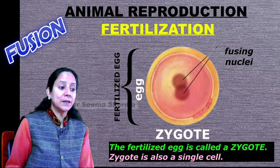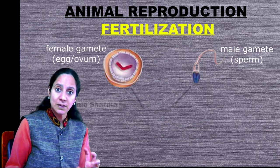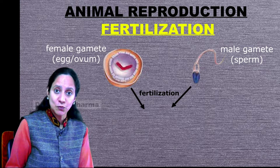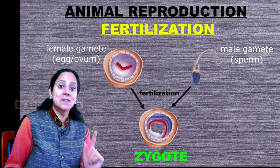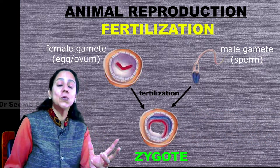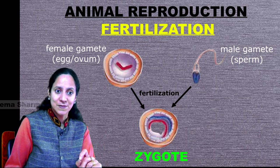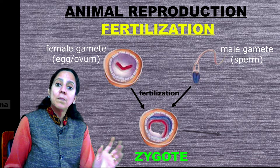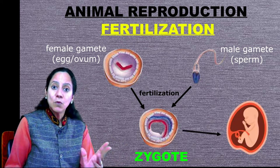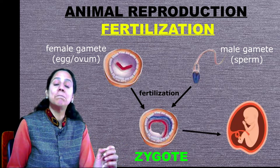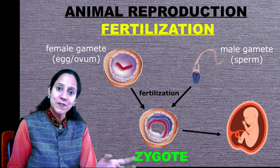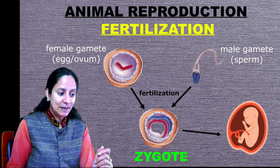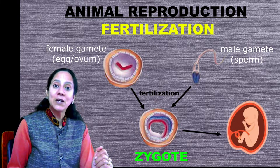The zygote is also a single cell. This picture depicts the process of zygote formation. Zygote is the first cell of the new individual or new organism. It changes over a period of time to form the complete organism. This is the pictorial representation of the same process — fertilization and zygote formation.